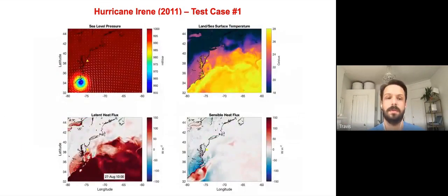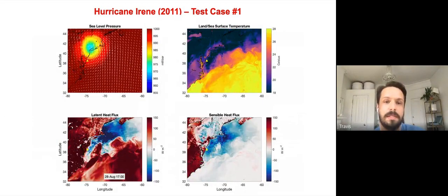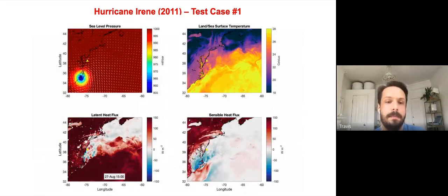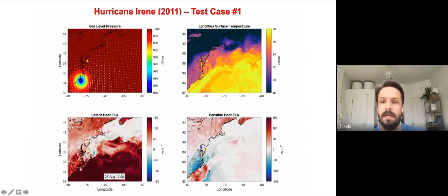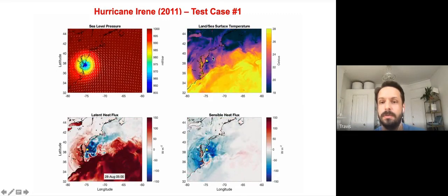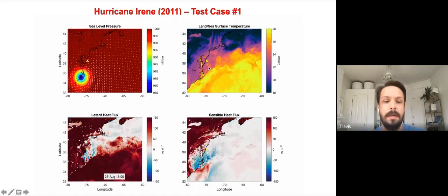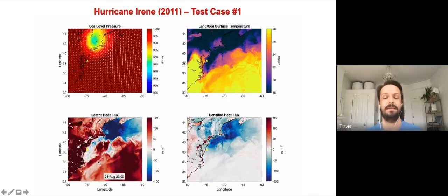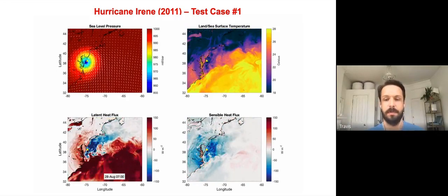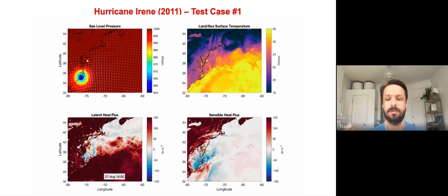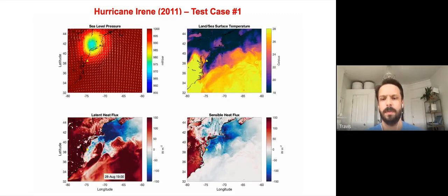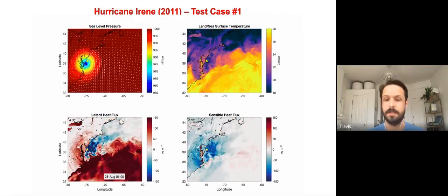The simulation shows sea level pressure, sea surface temperature, latent heat flux, and sensible heat flux. As the storm comes through, the ocean rapidly cools from about 26 to 18°C. Latent and sensible heat fluxes are actually negative — pulling energy from the atmosphere into the ocean — causing rapid storm weakening. Similar things happened in Tropical Storm Fay just a few weeks ago.